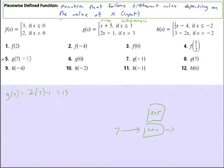That's all there is to it. Whatever value you want to put in, you check and see which subdomain it fits into, and that will tell you which rule to follow. g of 0. Since 0 is less than or equal to 3, we will follow x plus 5. So we will plug that 0 into x plus 5, which is 0 plus 5.